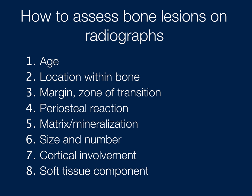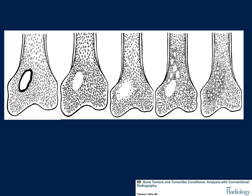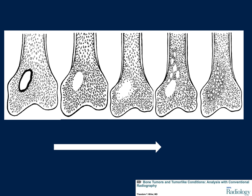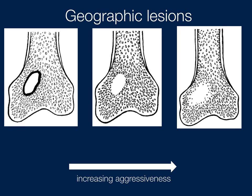Here is a nice diagram demonstrating from the left, the more non-aggressive lesion, to the right, the most aggressive. The one on the left has well-defined sclerotic margins, and the one on the right is very ill-defined. These are known as geographic lesions — type 1A on the left, type 1B and 1C. The classifications are not as important as recognizing the patterns.